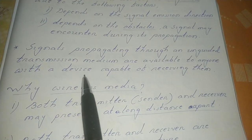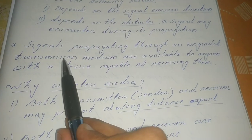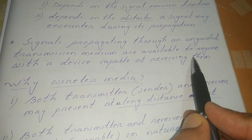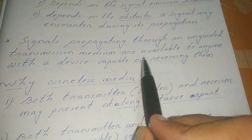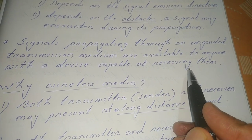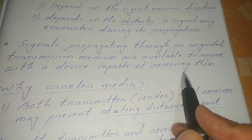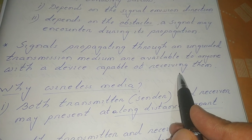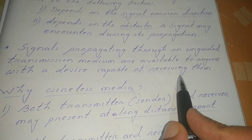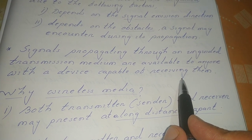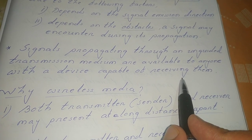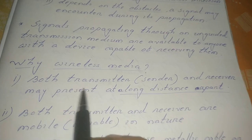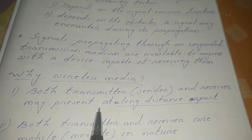Signals propagating through an unguided transmission medium are available to anyone with a device that is capable of receiving them. Any device can capture the signal you are transmitting, provided it possesses some special characteristics or meets certain criteria.